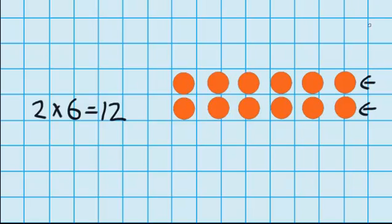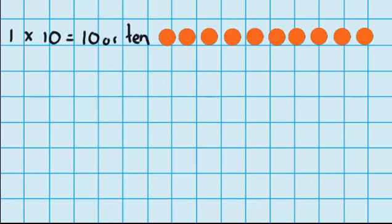So you can see here I've been using my 2 times tables to help me work out doubles. Now let's have a look at our 10 times tables and see if we can spot any patterns there.